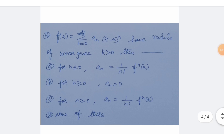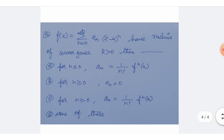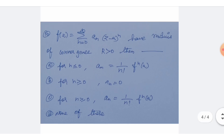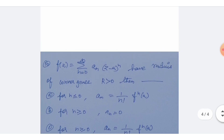Next question: if f(z) equals summation from n equals 0 to infinity of a_n times (z minus a) to the power n has radius of convergence R greater than 0, then which formula for the coefficients holds? Option A: for n less than or equal to 0, a_n equals 1 over n factorial times f^(n)(a). Option B: for n greater than or equal to 0, a_n equals 0. Option C: for n greater than or equal to 0, a_n equals 1 over n factorial times f^(n)(a). Option D: none of the above.